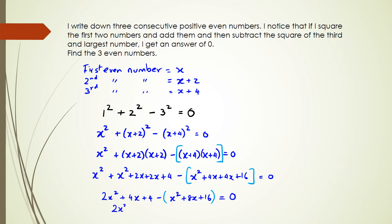Expanding the brackets out, I get two x squared plus four x plus four minus x squared minus eight x minus 16, and all of this is equal to zero.